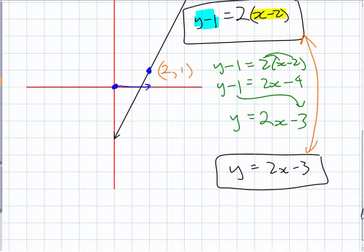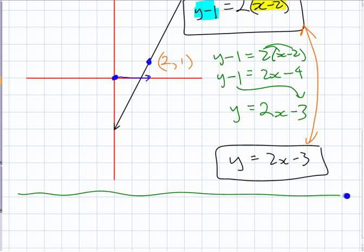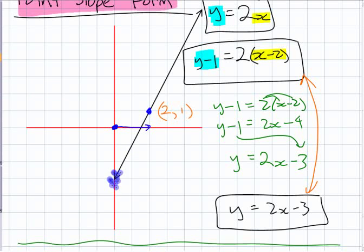It's called point-slope form because you can write an equation if you have a point and the slope. Here it was easy because we can just look at what the y-intercept is. But if I give you some crazy thing where you can't necessarily see the y-intercept right away, point-slope form is a lot easier.